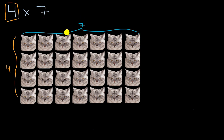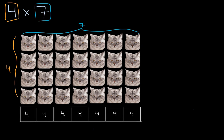If someone were to ask you what's the total number of cats, it would be four rows times seven columns — four times seven. Another way to represent four times seven is with a tape diagram, where we're visualizing it as seven fours, or four plus four plus four plus four plus four plus four plus four.